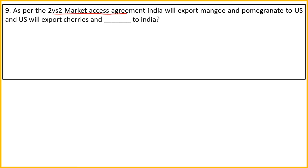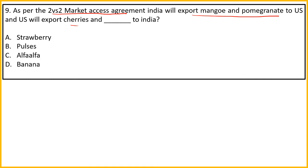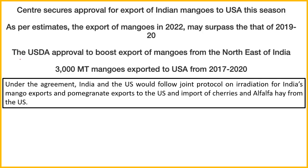Ninth question: As per the 2 versus 2 market access agreement, India will export mango and pomegranate to the US, and the US will export cherries and what else to India? Options: A. Strawberry, B. Pulses, C. Alfalfa, D. Banana, E. None of the above. Basically India and the US set up a mechanism to exchange two items each. The answer is option C - Alfalfa. The US will export cherry and Alfalfa to India.